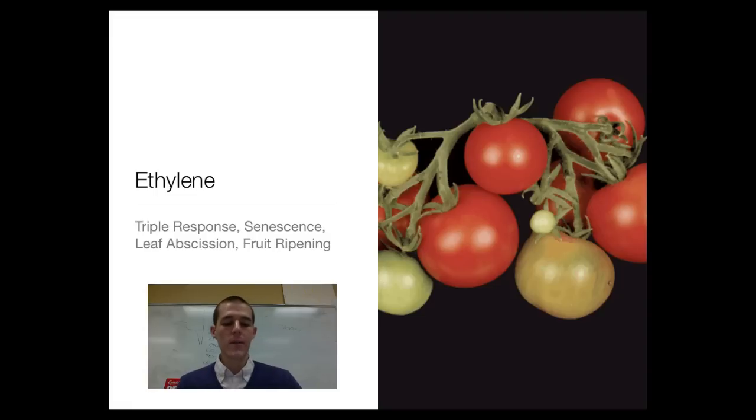First thing it does is it functions in the triple response. Let's say we have a seed. It's germinated and is sending out a shoot that's growing up through the soil. If that shoot is growing through the soil and encounters a rock, ethylene gas is produced, which induces a triple response. The triple response is as follows: The shoot starts to harden and grows thicker. It also causes the shoot to start to grow horizontally rather than vertically, and then it causes it to turn back in the other direction. This ethylene gas is responsible for the triple response. It allows our shoot to navigate its way towards the surface of the ground.